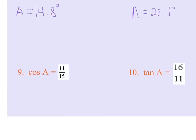Cosine of angle A equals 11 over 15. So what we're going to do is on our calculator, we are going to enter the inverse cosine and do 11 divided by 15. And that's going to give us the measure of angle A.